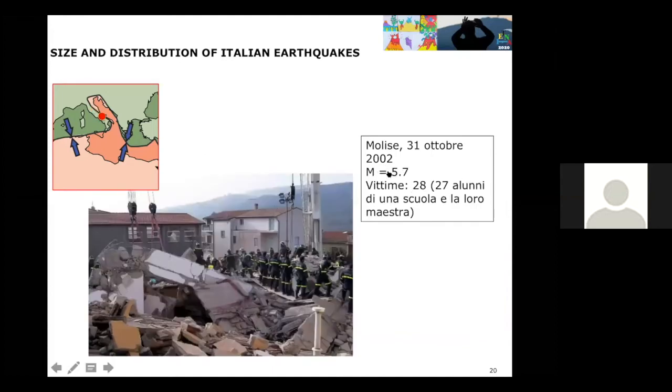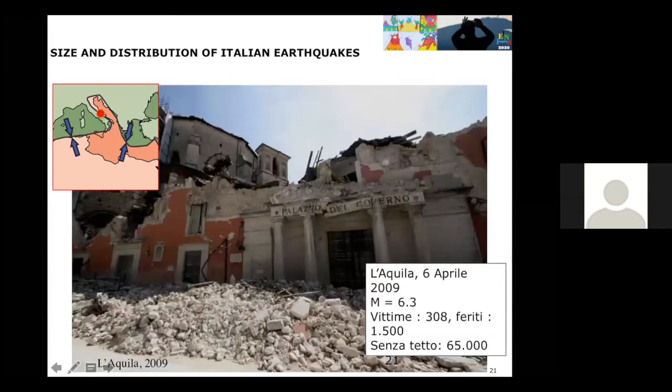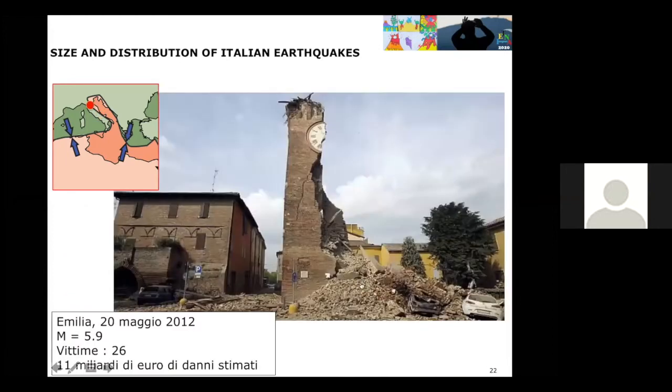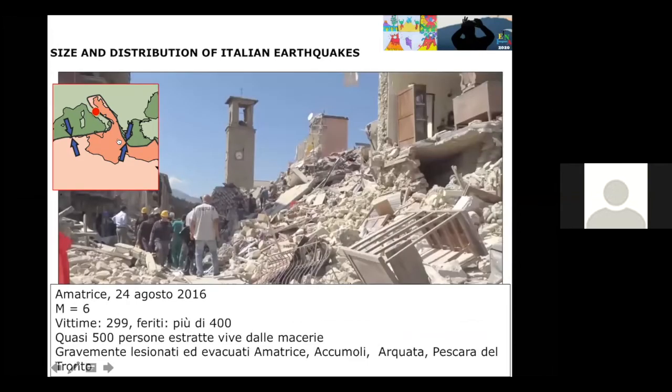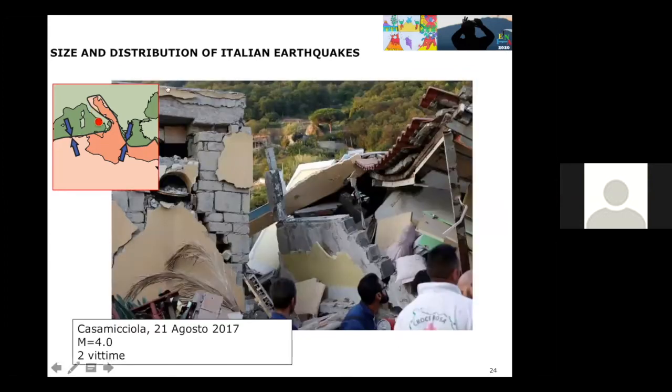In Molise, the magnitude was not so big, but this earthquake was sadly known for the death of an entire class of students. L'Aquila in 2009, 65,000 people without their own house. In Emilia-Romagna in 2012, and Amatrice in 2016, magnitude six. One of the last earthquakes was in Ischia Island, where the magnitude was very low, magnitude four, which means the force is less than breaking one spaghetto, but the victims were two.